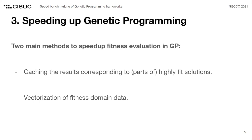In turn, the second method aims to abstract the process of domain evaluation with one single vectorized operation. This abstraction layer can be useful because, on the one hand, it ignores the overhead caused by iterating through the set of fitness cases, and on the other, it takes advantage of the parallelization capabilities of modern CPUs and GPUs.